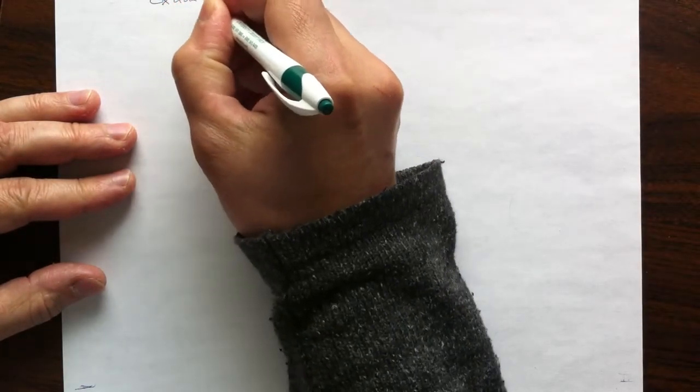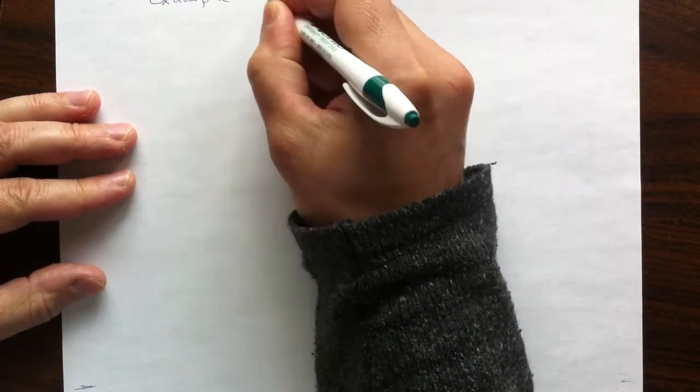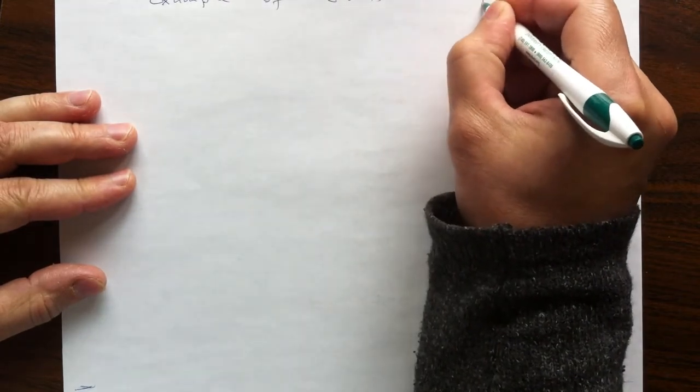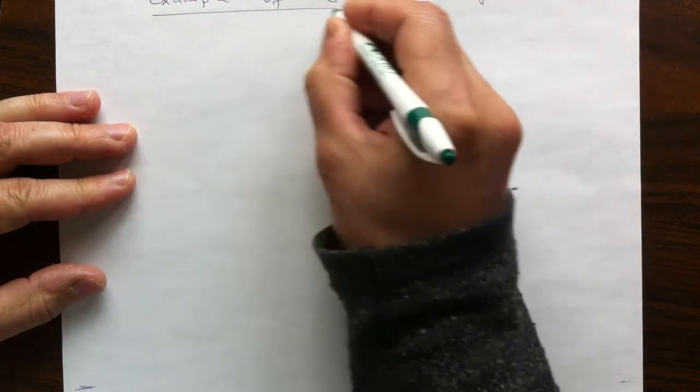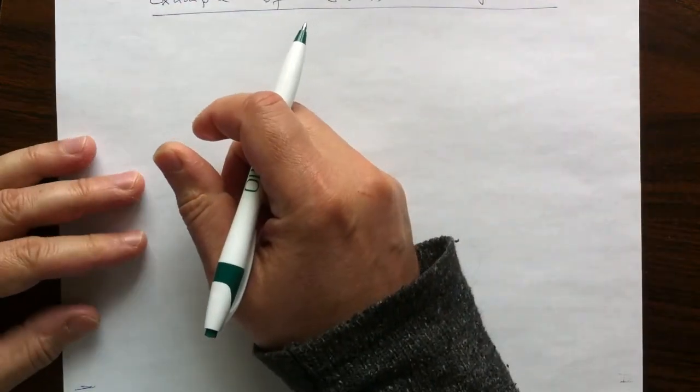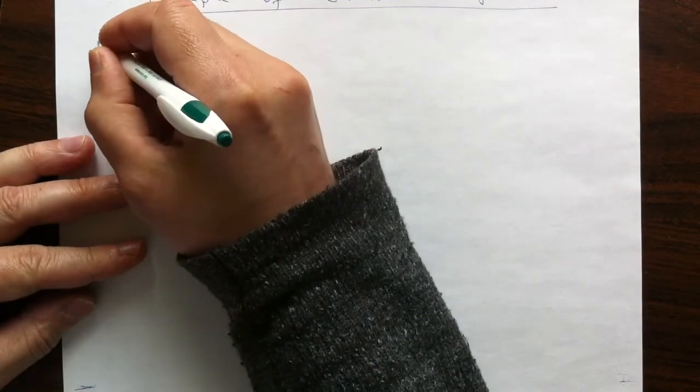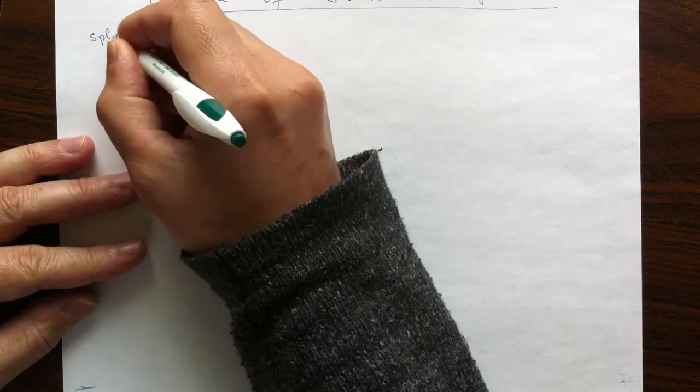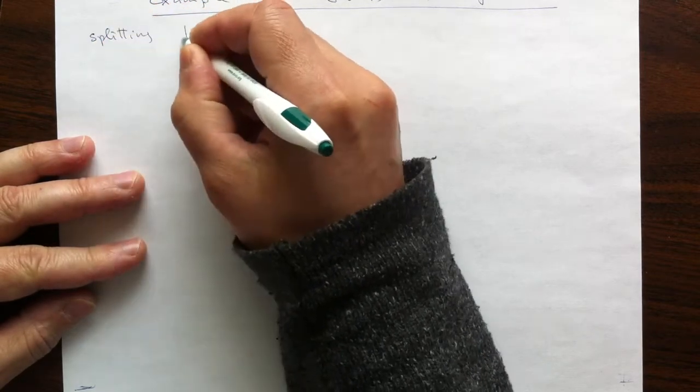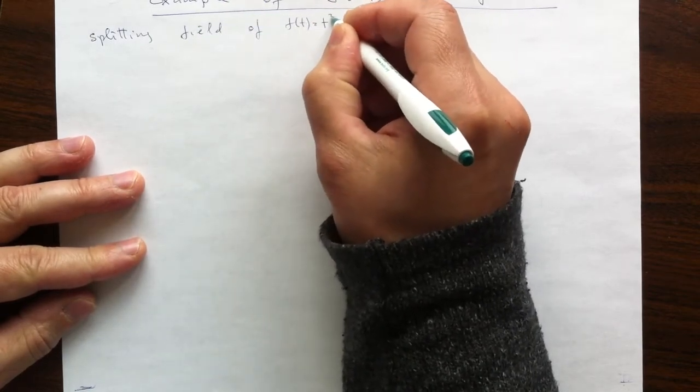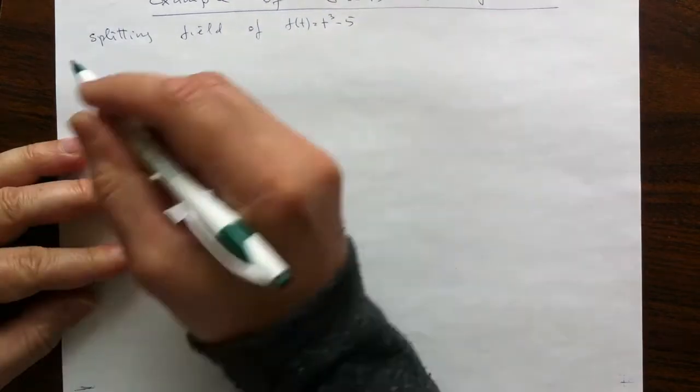Hello. Here we talk about another example of Galois correspondence. In this example I will analyze subfields of the splitting field of this cubic t cubed minus 5 over the rationals.